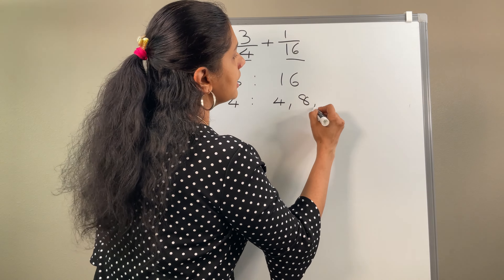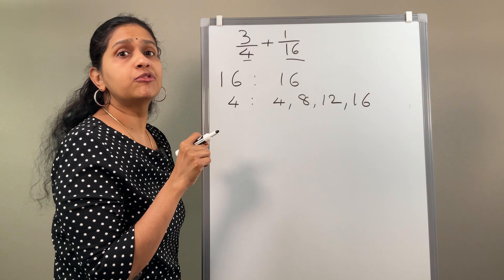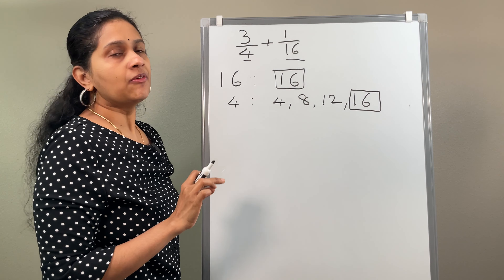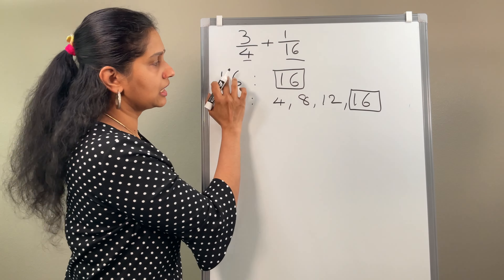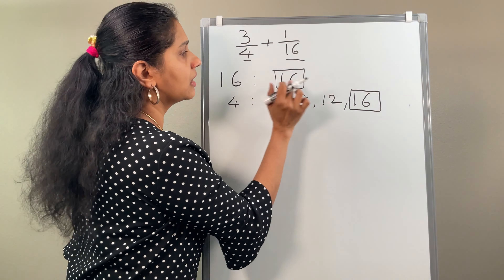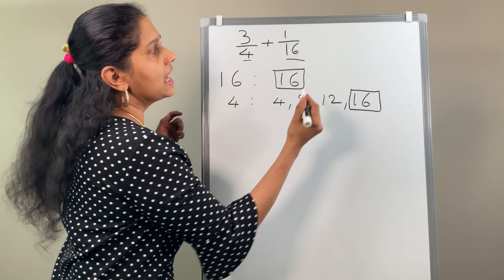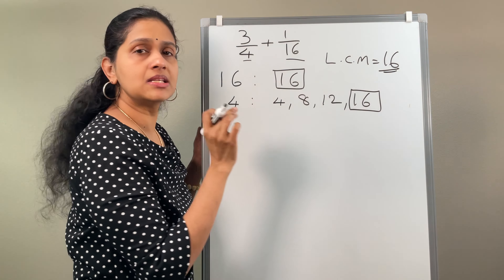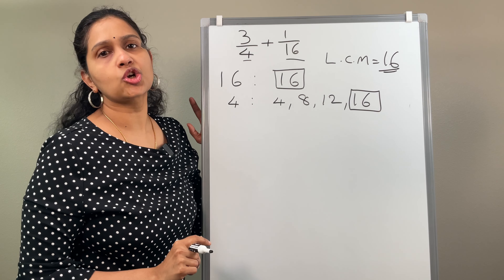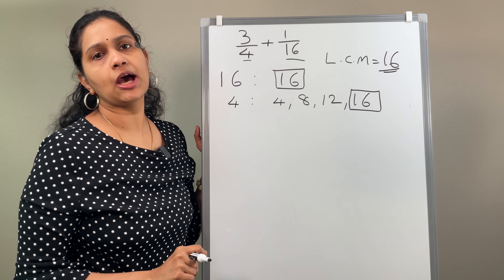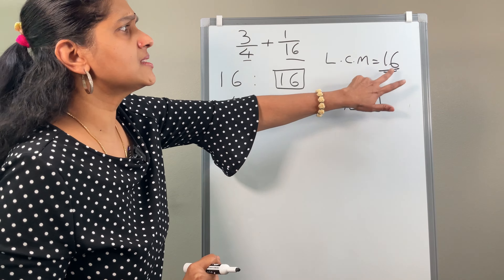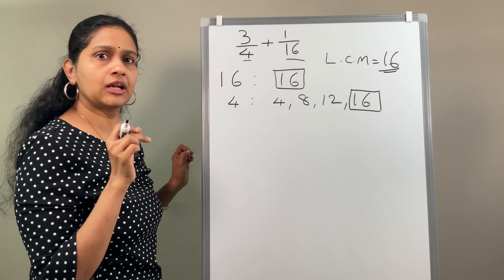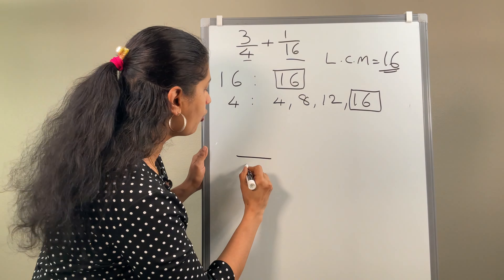To find the LCM, let us first write the multiples of 16: 16 times 1 is 16. Now let us write the multiples of 4: 1 times 4 is 4, 4 times 2 is 8, 3 is 12, 16. We stop when we see the first common number in both 16 and 4. The common number here is 16. So the LCM is equal to 16 — that is the least common multiple, the first matching number. If you want more details about LCM, I have already uploaded a video with a link in the description below.